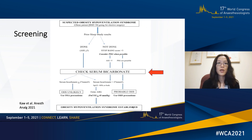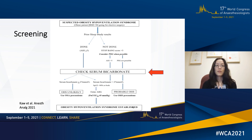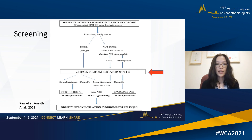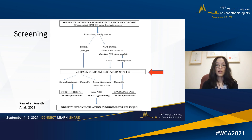This is a screening algorithm for patients with suspected OHS. A prior sleep study result should be obtained if possible. If it has not been done, a screening questionnaire such as the STOP-BANG questionnaire should be performed and a PSG should be obtained when possible. A serum bicarbonate should be obtained. If the serum bicarbonate is less than or equal to 27, OHS is very unlikely. If greater than 27, this suggests the patient probably has OHS, and an arterial blood gas should be obtained. If the arterial PCO2 is greater than or equal to 45, this establishes that the patient has OHS.